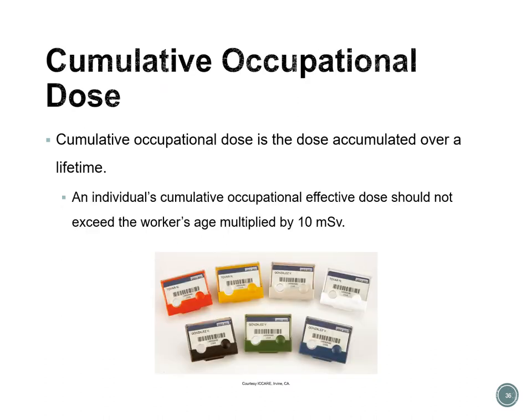The cumulative occupational dose is the dose accumulated over a lifetime. An individual's cumulative occupational effective dose should not exceed the worker's age multiplied by 10 millisieverts. For example, if the worker is 60, then 60 times 10 equals 600, so the individual should not have been exposed to more than 600 millisieverts in their lifetime. To begin working with radiation and become certified, you must be at least 18 years old.